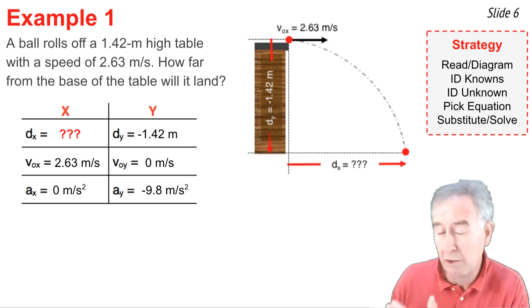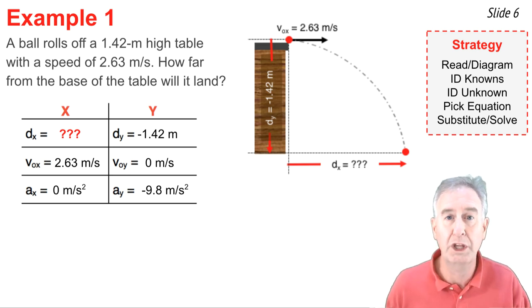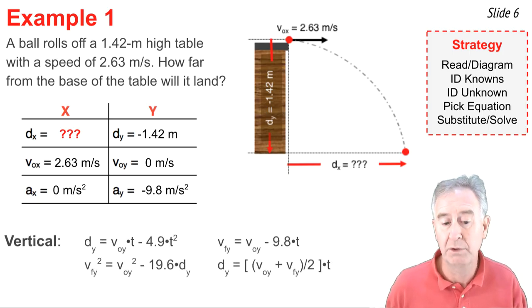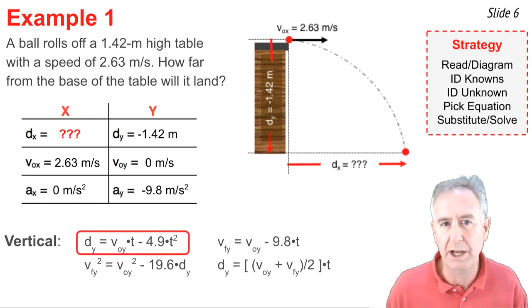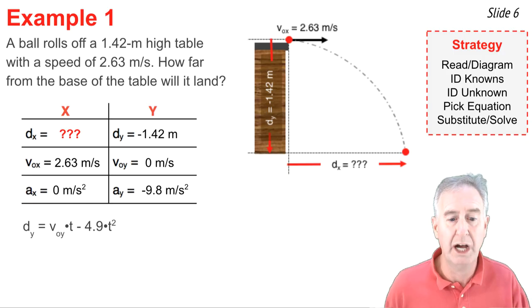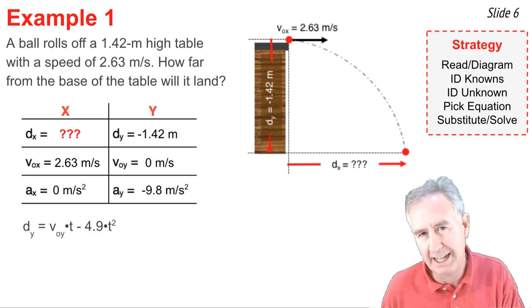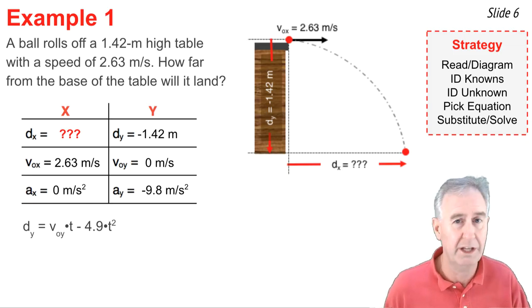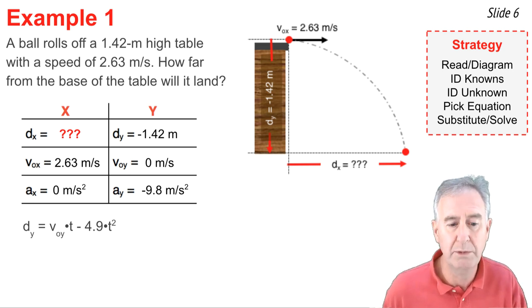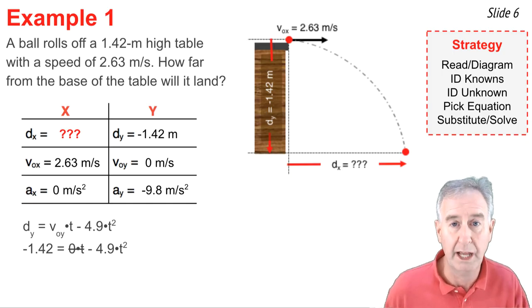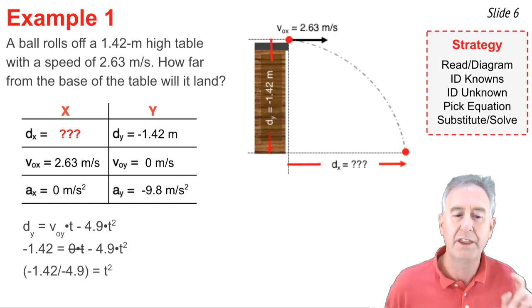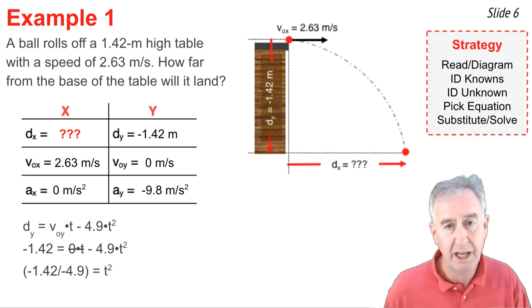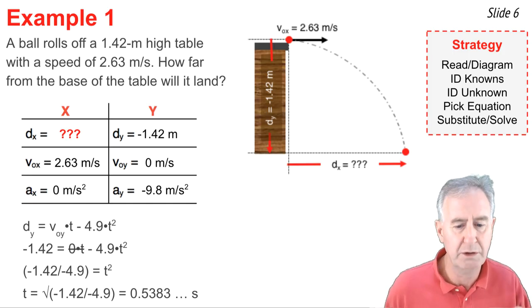So if I look in my table, I have three bits of information in the Y column. So I'm going to look for a vertical equation that has DY, VOY, and AY in it. And I'm going to use it to solve for time. It's the first one top left that has just what I need to solve for time. So I write it down. And then I'm going to substitute values of DY and AY and VOY into the equation. The second term is negative 4.9 T squared. I put negative 1.42 meters in for DY. And then I can put 0 in for VOY. And that means the first term on the right side cancels out. Now I can divide both sides of the equation by 4.9. And I end up with negative 1.42 divided by negative 4.9 equal T squared. And I take the square root of each side and I get 0.5383 seconds. I'm going to keep the number on my calculator because I'm going to use that number.